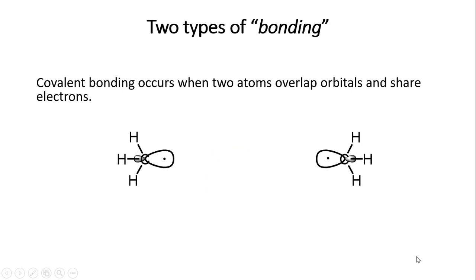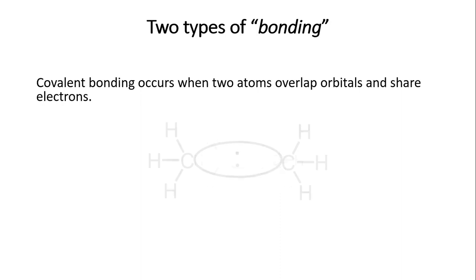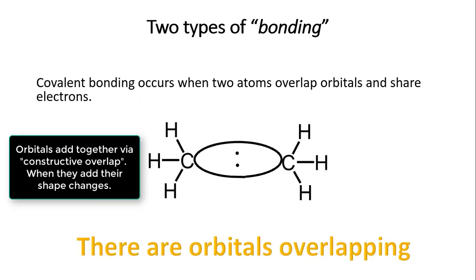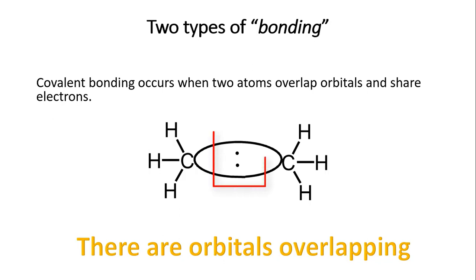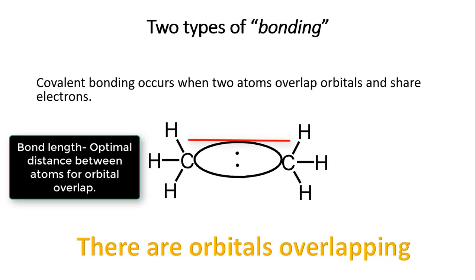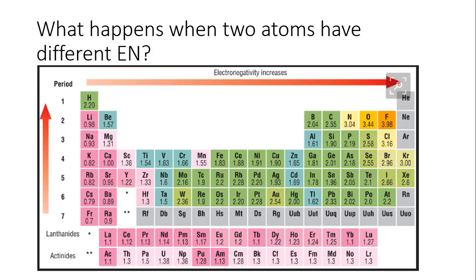The other type of bond is a covalent bond. 'Covalent' means shared valence — the outer electrons participate in bonding. A covalent bond occurs when two atoms have orbitals that overlap and electrons are shared between them. When the orbitals overlap and add together, you have a covalent bond with electrons positioned equidistant between both atoms, at an optimal bond length.